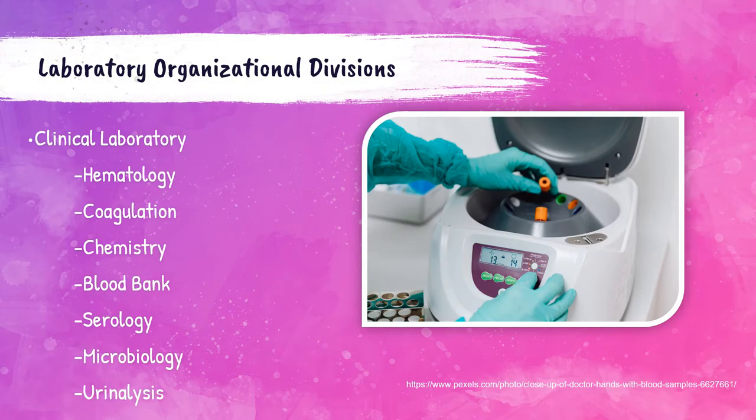The second section of the laboratory is the clinical laboratory section. The different areas of the clinical laboratory include hematology, coagulation, chemistry, blood bank, serology, microbiology, and urinalysis. We'll talk about these specific clinical laboratory departments on the following slides.